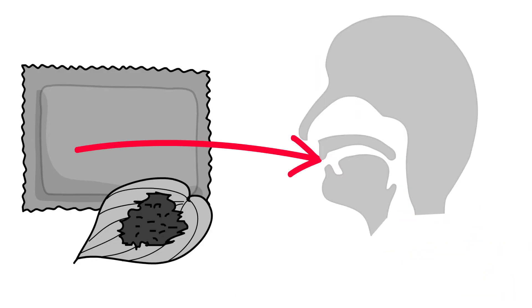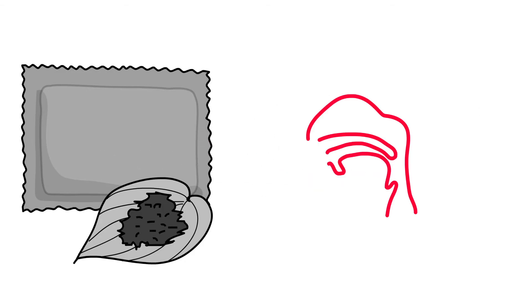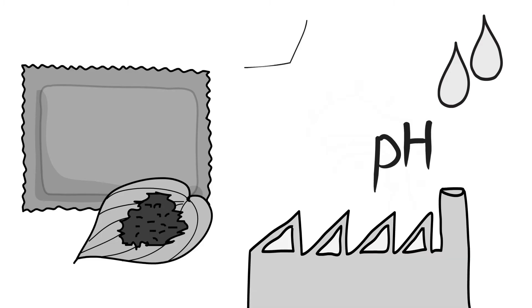When smokeless tobacco is placed in the mouth or inhaled through the nose, the nicotine is absorbed and delivered into the bloodstream. Nicotine levels in smokeless tobacco products vary widely by brand and by country based on a number of factors, including moisture and pH levels of the product, how it's manufactured, and storage practices.